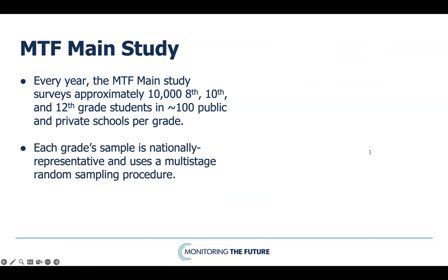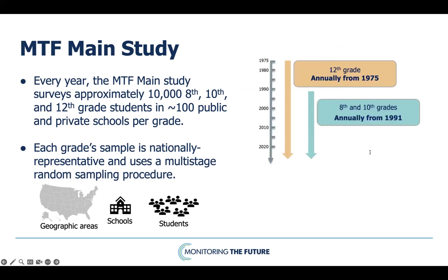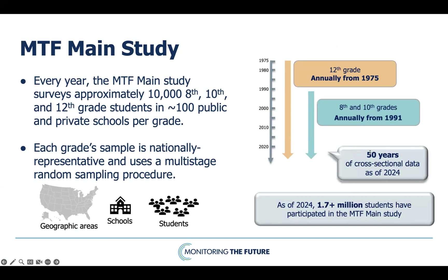Separate samples are pulled for each grade, and each sample is nationally representative. A multi-stage random sampling procedure is used to secure the nationwide sample of students each year at each grade level. The sampling procedure incorporates geographic areas, schools, and students within schools. The MTF main study began with 12th grade students in 1975. Starting in 1991, similar surveys of 8th and 10th graders have been conducted annually. As of 2024, the MTF main study has 50 years of cross-sectional data for more than 1.7 million students.